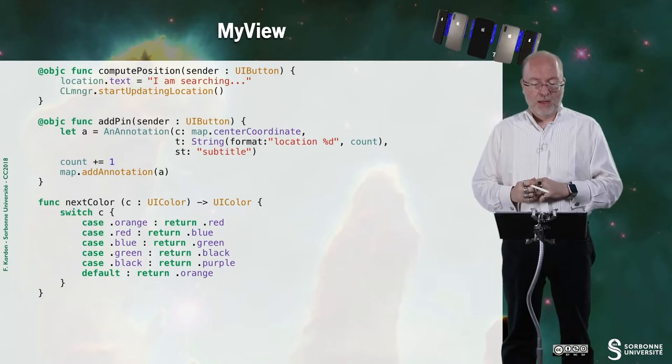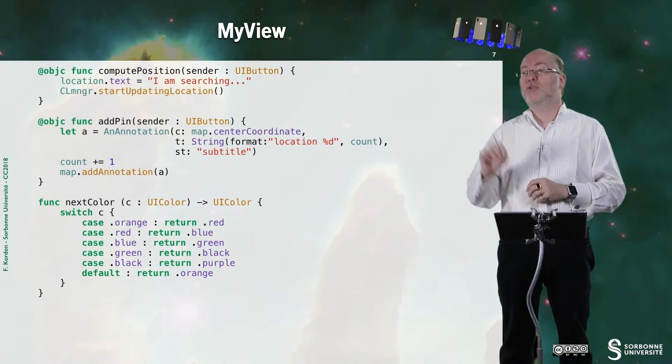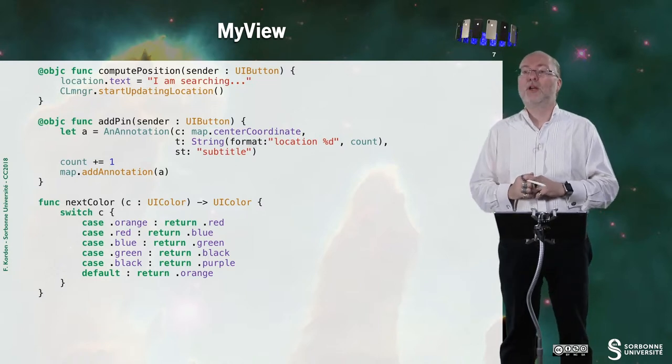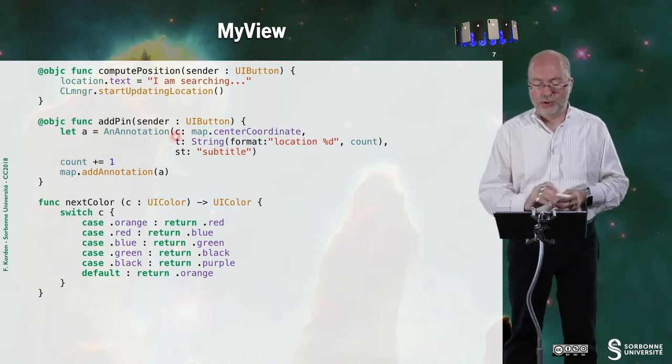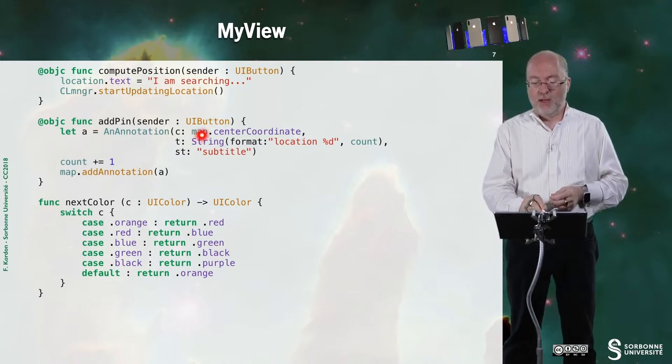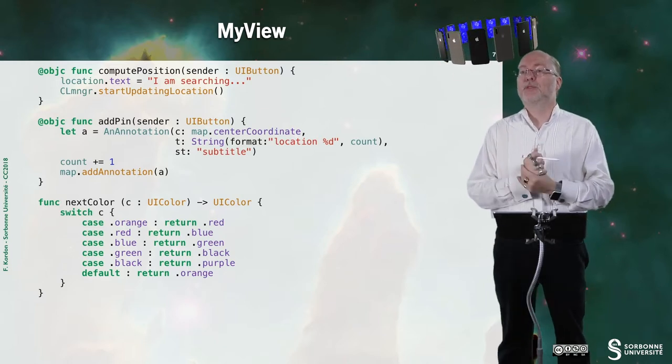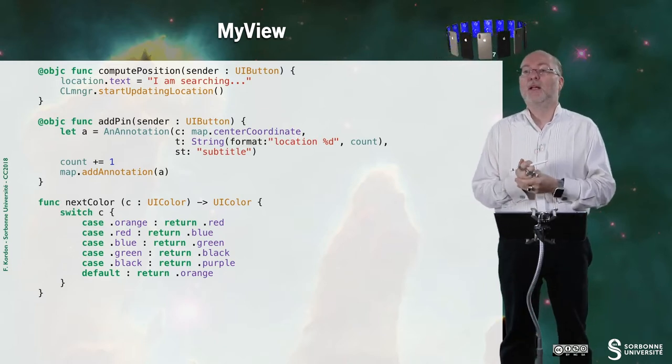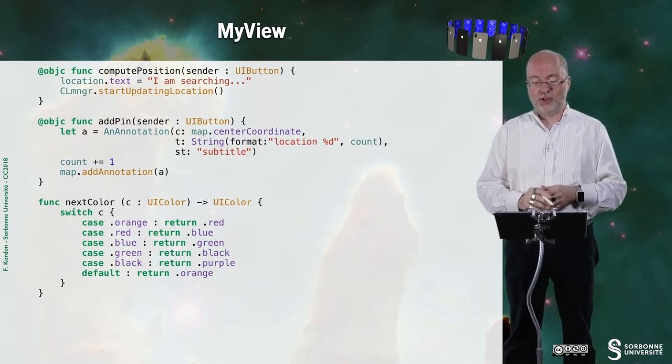And I am also another action that is associated to the plus button which in fact allow me to add a pin. So I create a new annotation. I center this annotation on the map. So I set it there. And then I create a title and a subtitle.